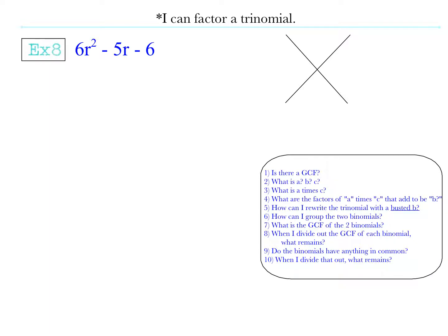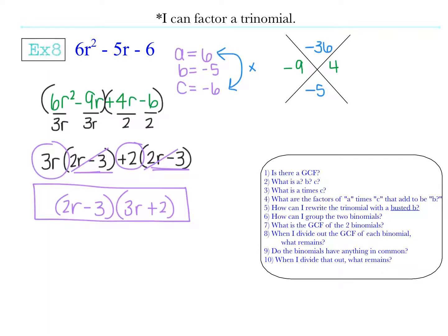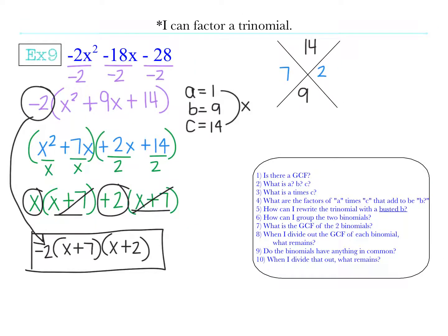See how you do on example 8 - hopefully you got 2r minus 3 times 3r plus 2. We have one final example, so go ahead and try example 9. Hopefully you were able to see that you could take out a negative 2 at the beginning and then bring it back at the end, and you end up with x plus 7 times x plus 2.